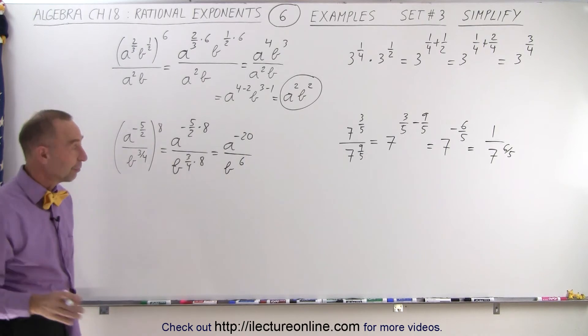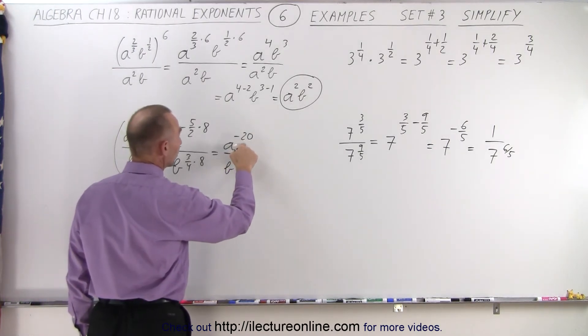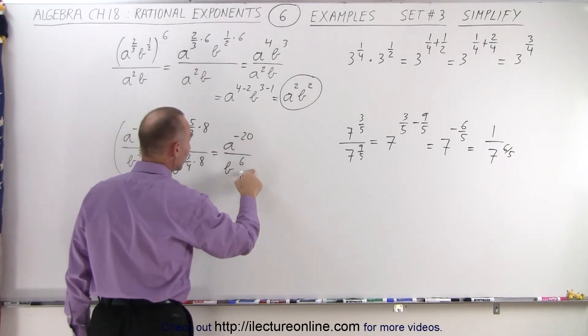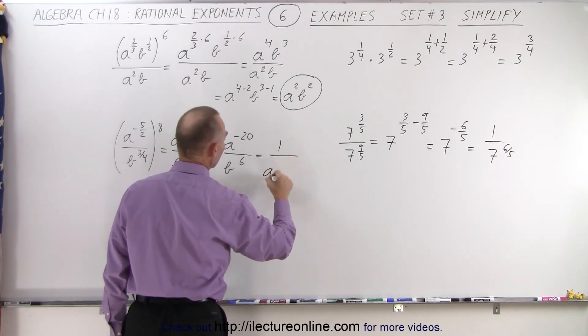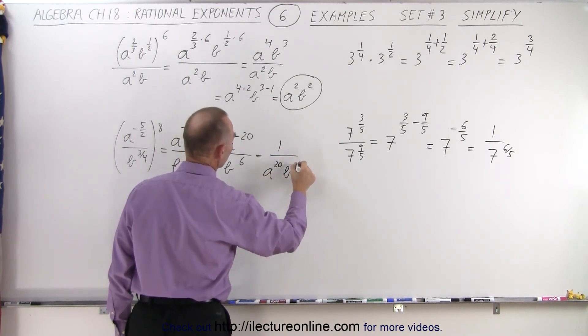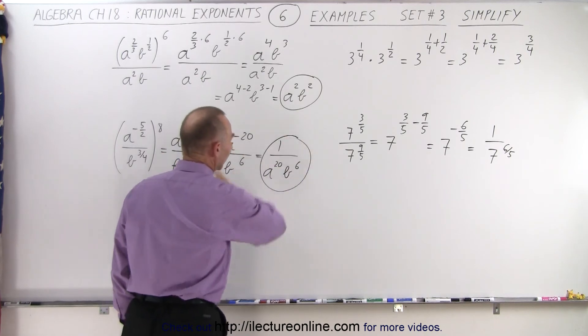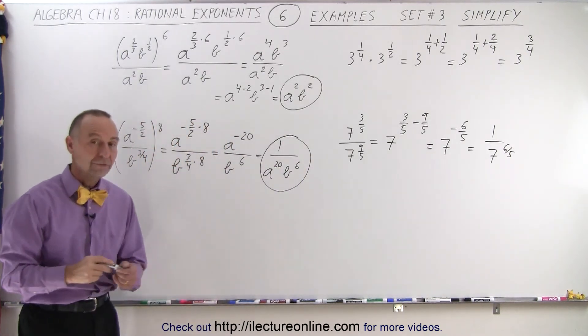And again, just like before, negative exponents can be turned into positive exponents by moving them to the denominator. So this is equal to 1 over a to the 20th power b to the 6th power. And that's the final reduced form of that expression.